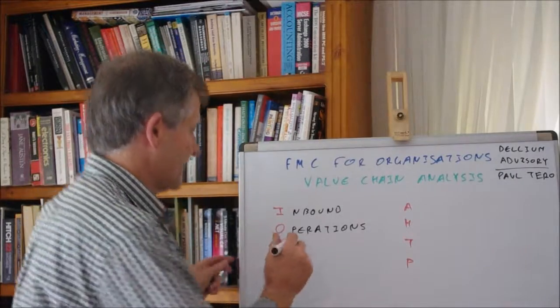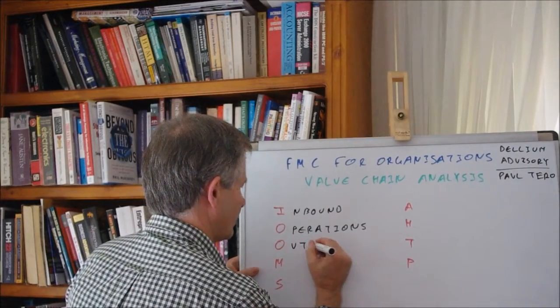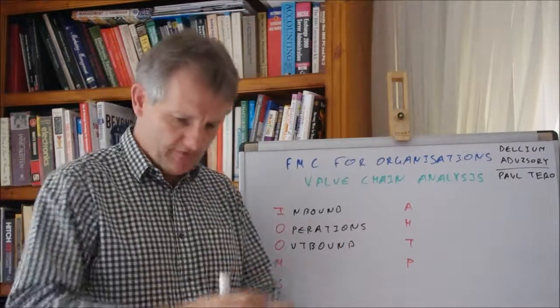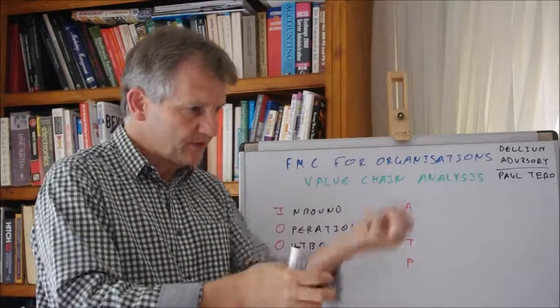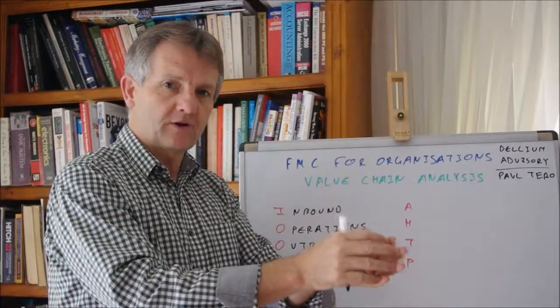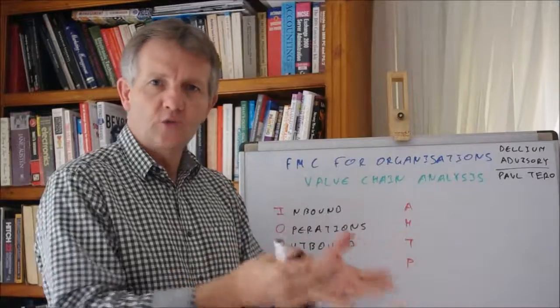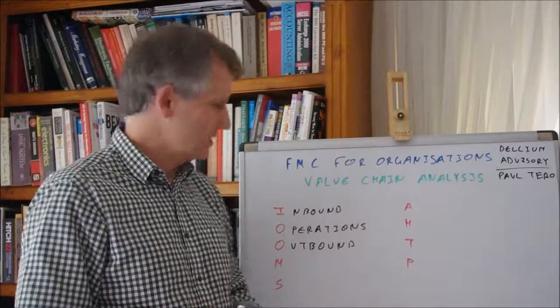O is for outbound. You have your raw materials, they're transformed. And then how do those products get out to the customers? What are the logistical processes that you use?